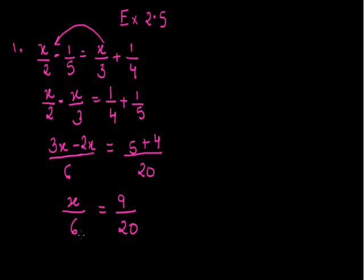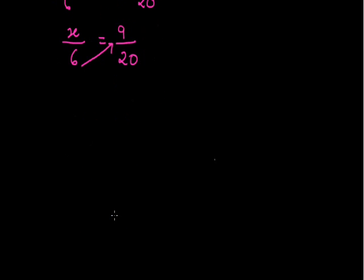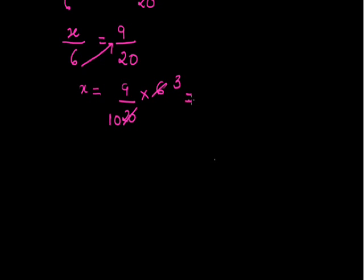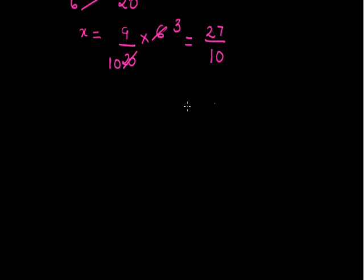Now to calculate the value of x, I can shift this 6 to the right hand side. So x is equal to 9 upon 20 into 6. I can cancel out: 2 into 3 is 6, and cancelling gives 1. The value of x will be 3 into 9, that is 27 upon 10. So the value of x is 27 upon 10.